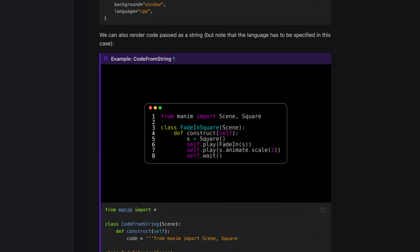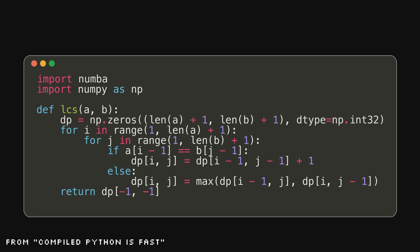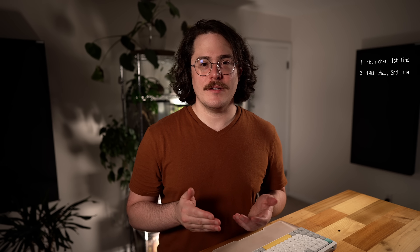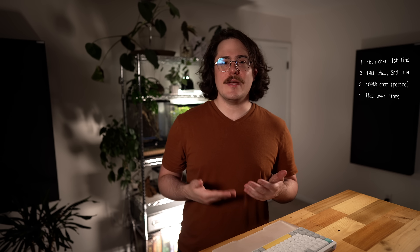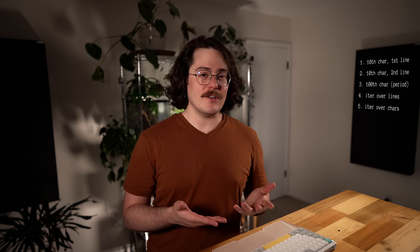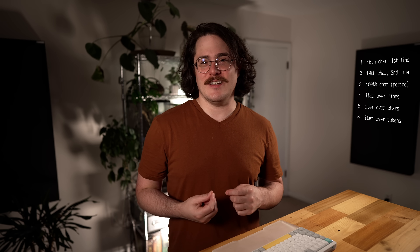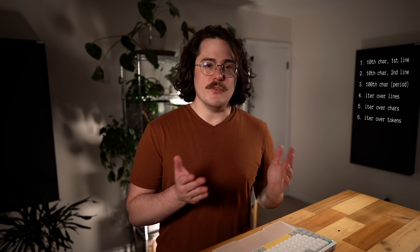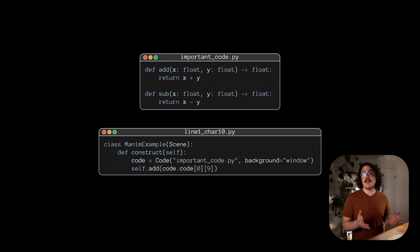For this next feature, I'm actually going to start by putting a way better animation library on blast. Manim is an awesome animation library created by Grant Sanderson of the YouTube channel 3Blue1Brown, later adopted and extended by the broader Manim community. They have a code object — it looks like this. And if you've watched my older videos, you've actually seen me use it. I'm going to list some things that you might want to do with an object like this, and I want you to decide if it sounds easy or hard. Number one: get the tenth character on the first line of code. Number two: get the tenth character on the second line of code. Number three: get the hundredth character overall. Number four: iterate through each line of code. Number five: iterate through each character in the code. And number six: iterate through each Python token in the code. Pencils down. If you thought it'd be easy to do number one, you'd be right. code.code is a sequence of lines, and each line is a sequence of characters, so code.code[0][9] would be the tenth character on the first line.